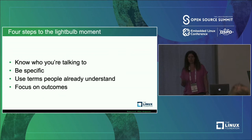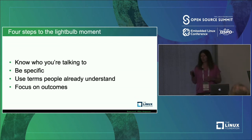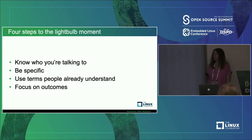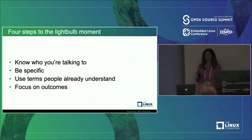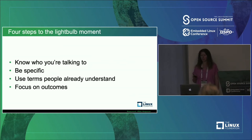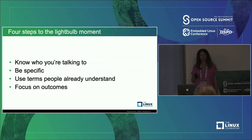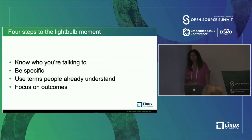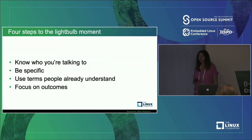So how do we get people to that light bulb moment as quickly as possible? There are really four steps. One is knowing exactly who you're talking to — being really clear about who your target user and audience is. The second is being very specific. Third is using terms that people already use and understand. And then the last one is to focus on outcomes — the pain or problem people are coming to solve, and the outcome they get from using it.